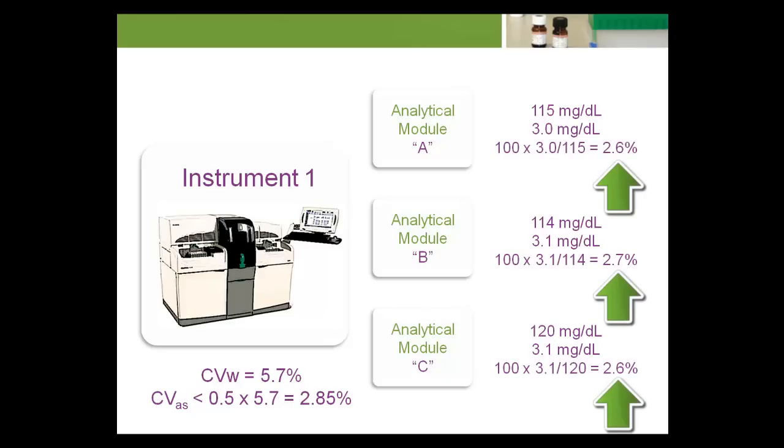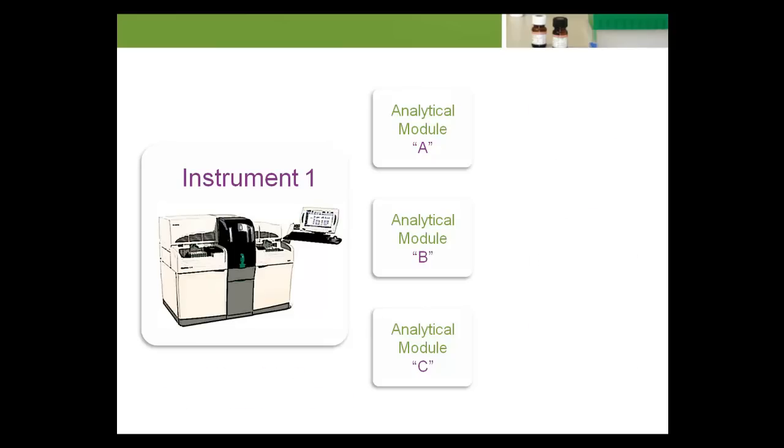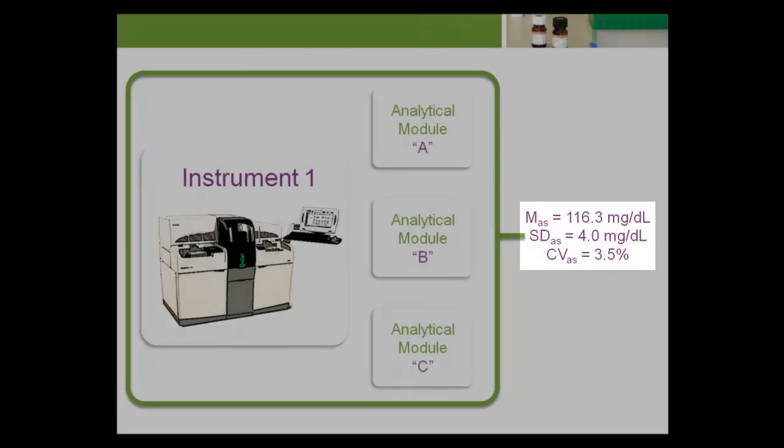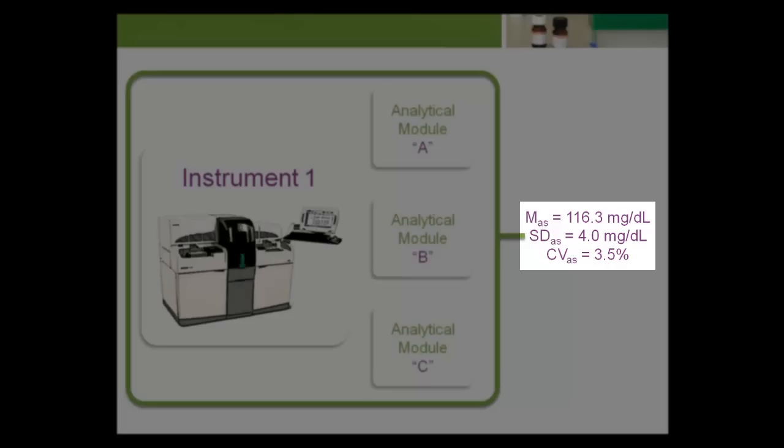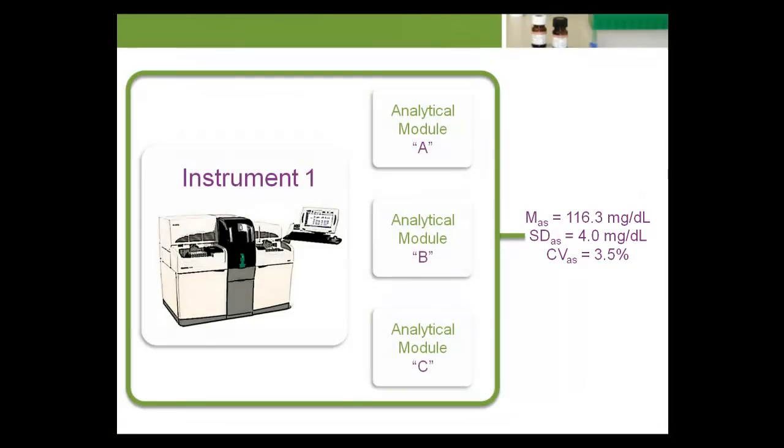Each individual module meets the less than 2.85% goal. However, applying the formulas for the total analytical system gives MAS equals 116.3 mg per deciliter, SDAS equals 4.0 mg per deciliter, and CVAS equals 3.5%, which does not meet the goal. The size of the bias between modules causes the total uncertainty of the test system to exceed the performance goal.